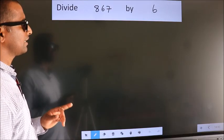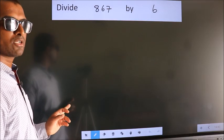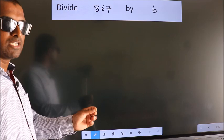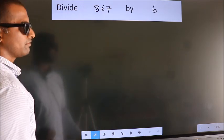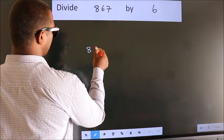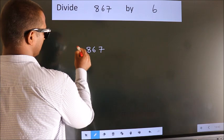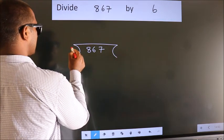Divide 867 by 6. To do this division, we should frame it in this way. 867 here, 6 here.